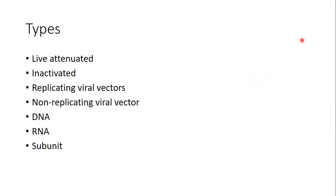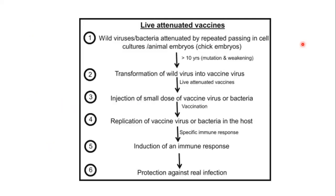As far as vaccines are concerned, there are various types based on the biological component inside. The first is live attenuated, the second is inactivated, the third is viral vector-based (which can be replicating or non-replicating), the fourth is subunit-based, and the novel approaches are DNA and RNA-based vaccines. We will look at each one.